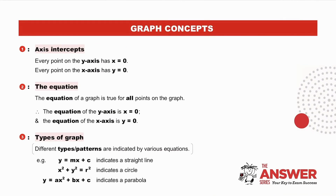And now, general concepts which apply to all graphs. Axis intercepts: because every point on the y-axis has an x-coordinate equal to 0, we substitute x equal to 0 in the equation of a graph to find the y-intercept or intercepts. And similarly, because every point on the x-axis has a y-coordinate equal to 0, we substitute y equal to 0 to find the x-intercepts, no matter what graph we're dealing with. The equation of a graph is true for all points on the graph.